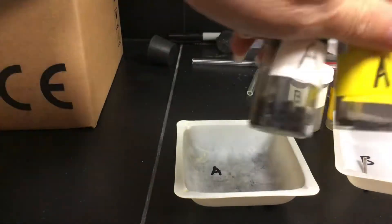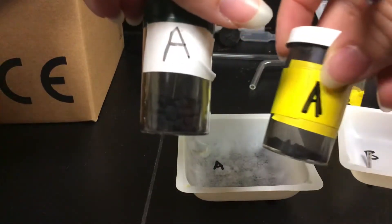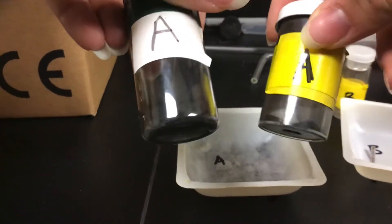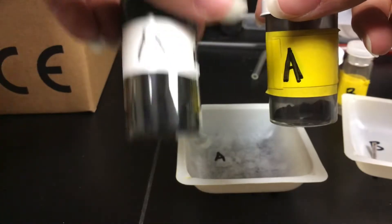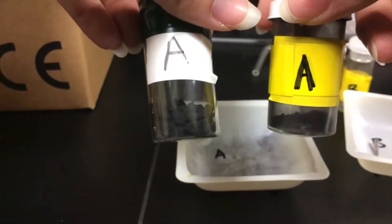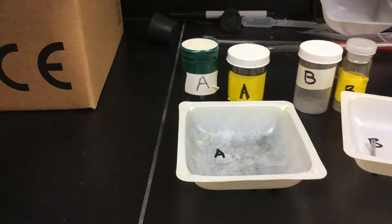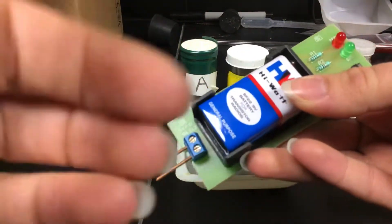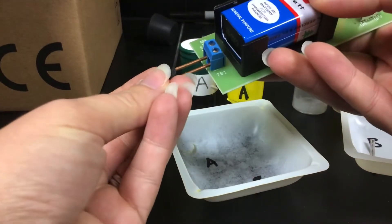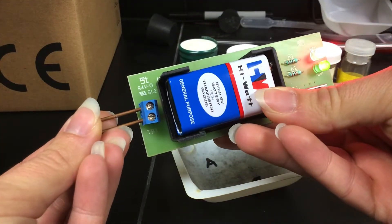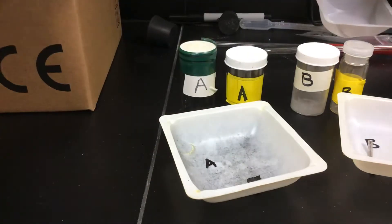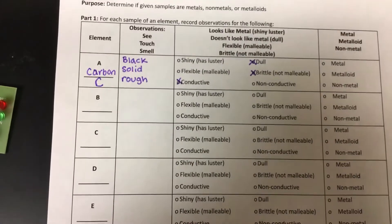For flexible or brittle, I have two containers here. The white container is before hitting the element with a hammer, and the yellow container is after. You can see there's a powder in the yellow container — when I hit carbon with a hammer, it breaks into a bunch of pieces, which means it is brittle. Then, using the conductivity tester, when I place carbon on the end of the tester, the light lights up. So carbon is conductive.